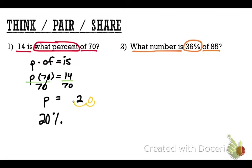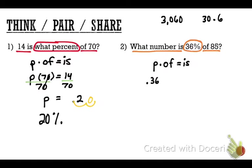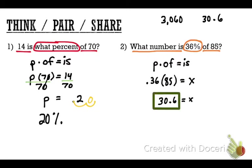Try problem two on your own. Two common answers came up: 3,060 and 30.6. The difference is whether you changed the percent to a decimal. You must change it to 0.36. Equation: 0.36 times 85 equals x. The correct answer is 30.6. If you got 3,060, you forgot to convert to a decimal — erase it and fix it.